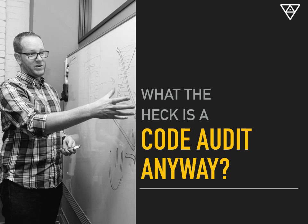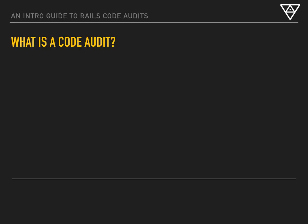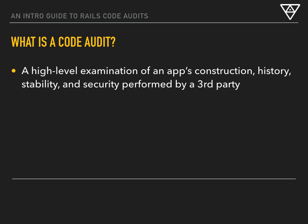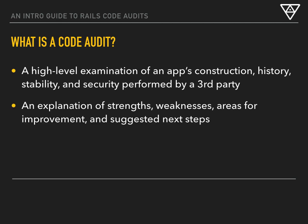So first, what the hell is a code audit anyways? Essentially, it's a third-party review of an existing code base. It's kind of like how your mortgage company requires an inspection before finalizing your home purchase. Our aim here is to provide the application stakeholders — business owners, product owners, investors, developers — with an independent assessment of what problems might be lurking under the surface.